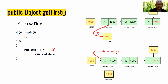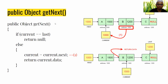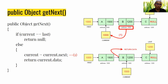We return the data and it goes back to the calling method. Next is getNext, which gets the next data. We need to call getFirst before calling getNext.